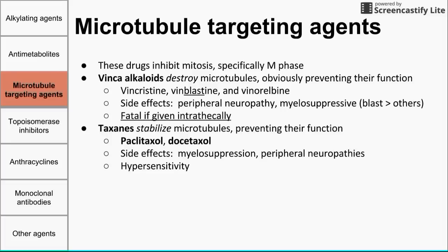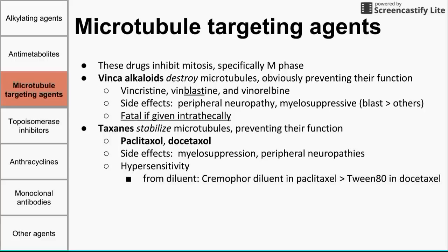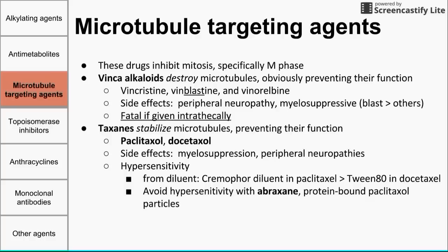There is also hypersensitivity associated with taxanes. Importantly, the hypersensitivity doesn't come from paclitaxel and docetaxel directly, but from the diluents the drugs are dissolved in — cremophor and Tween-80 — both of which cause hypersensitivity. Cremophor from paclitaxel is a little more potent. If we don't want to deal with this hypersensitivity, we can administer Abraxane, a protein-bound formulation of paclitaxel that avoids the cremophor diluent. The trade-off is more neuropathy but less hypersensitivity.